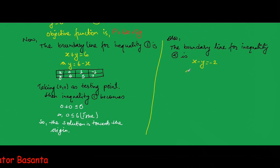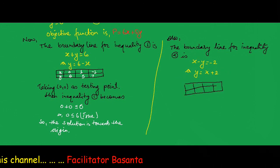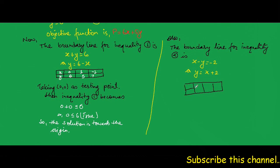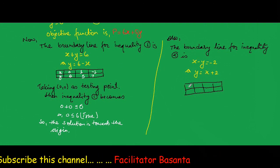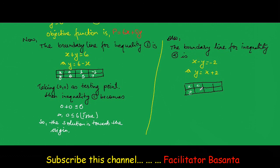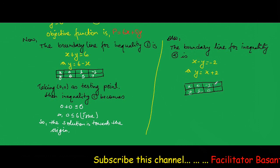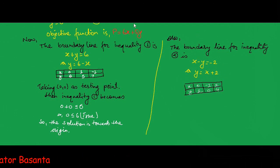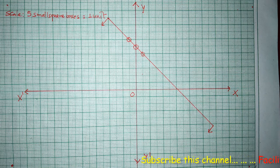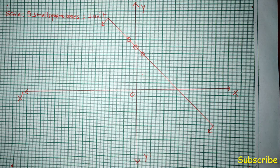The boundary line for inequality two, x minus y is greater than or equal to minus 2, is x minus y equals minus 2, or y equals x plus 2. We need to find the coordinates. If x is 0, y is 2. If x is minus 2, y is 0. If x is 2, y is 4.